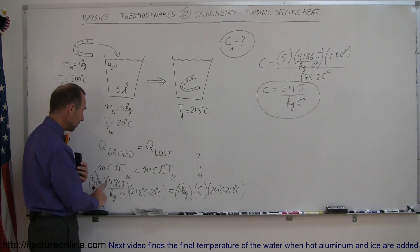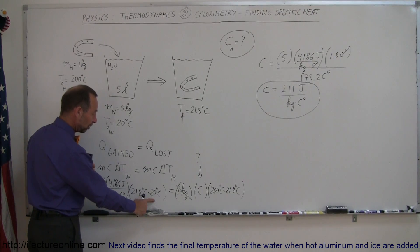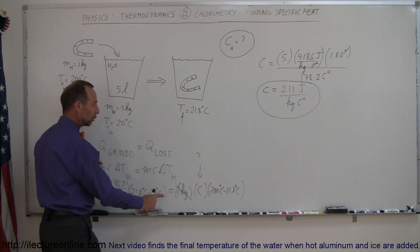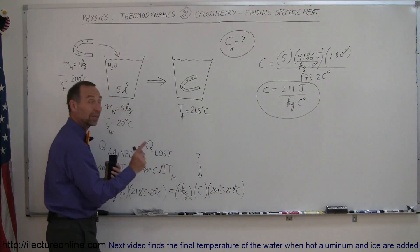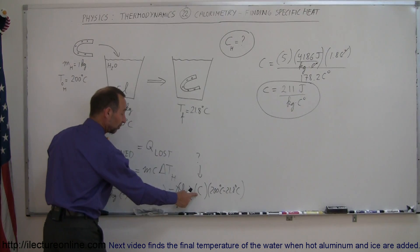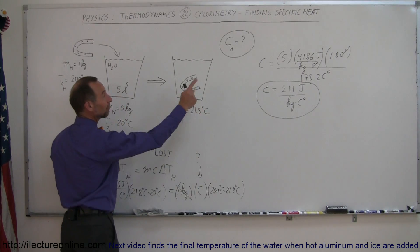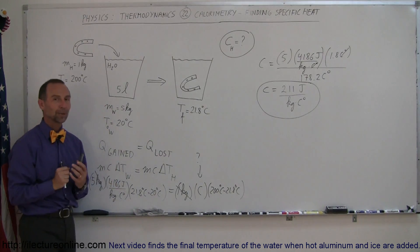So we put the mass down, the specific heat, and the change in the temperature. Make sure it's a positive value. And over here, the mass, the specific heat, and the change in the temperature. The only thing we don't know is the specific heat for the horseshoe. We then figure that out right there, and that's how you do the problem.